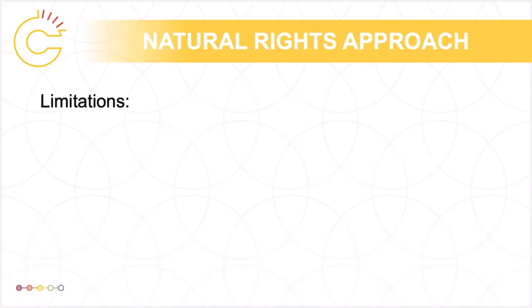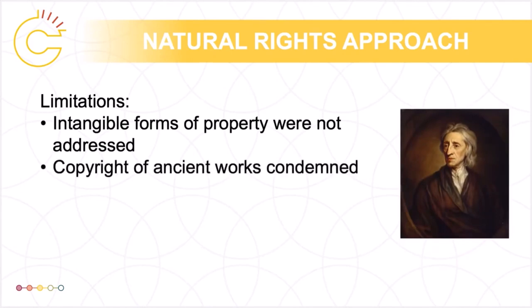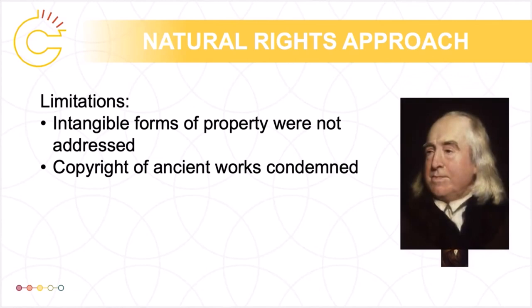The natural rights-based perspective does have limitations. In Two Treatises, Locke was not addressing intangible forms of common property, and Locke specifically wrote on the subject of copyright, where he condemned providing copyright to ancient works and suggested that the term for copyright should be at most 70 years after the death of the author. Lockean justifications of copyright and other IP have always held a degree of appeal in Anglo-American debates, but have tended to take a secondary role to utilitarian justifications. However, the Lockean notion of a just reward for the creator is often used to supplement utilitarian arguments based on providing incentives.